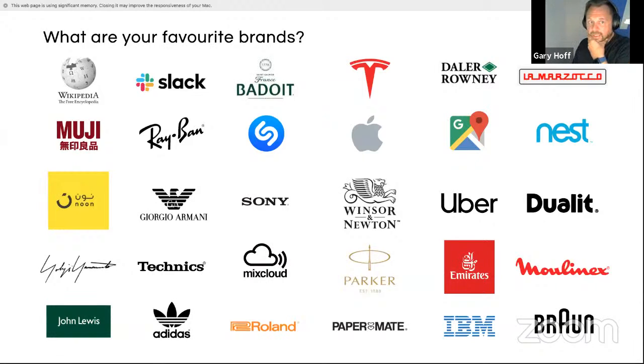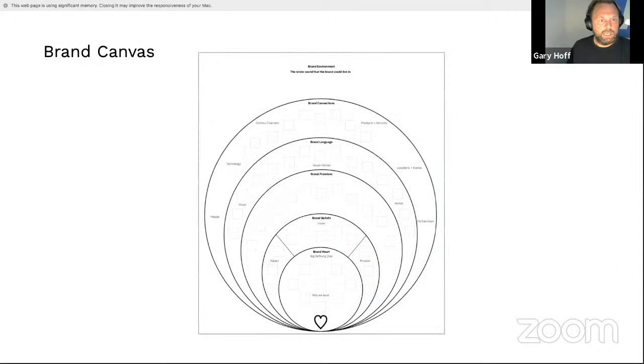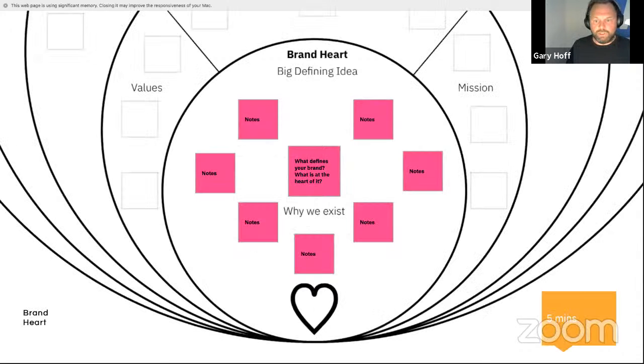Another exercise you can do in your own time is map out all the brands on a grid and think about why they're important to you and why you love to use them. So that's something you can do as a really good asset. Say, what are the brands out there that understand me and really understand how to deliver a brand experience? And another exercise I like to do is to use a brand canvas. So thinking about at the center of it, that defining idea, the brand heart, what's at the heart of the brand? And then what are the brand beliefs, the promises, language and the connections out to the world?